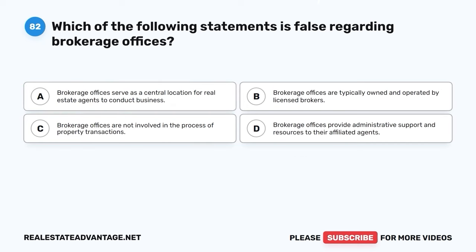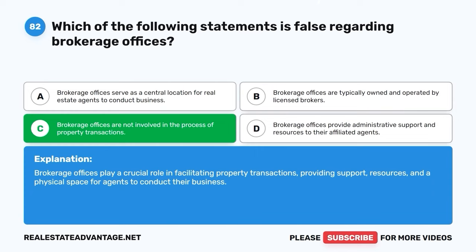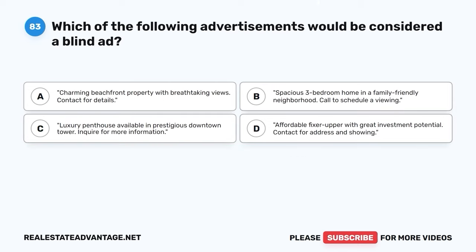Question 82. Which of the following statements is false regarding brokerage offices? The correct answer is C: Brokerage offices are not involved in the process of property transactions. In fact, brokerage offices play a crucial role in facilitating property transactions, providing support, resources, and a physical space for agents to conduct their business.